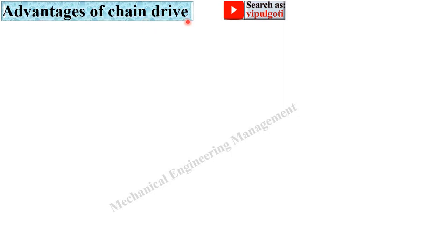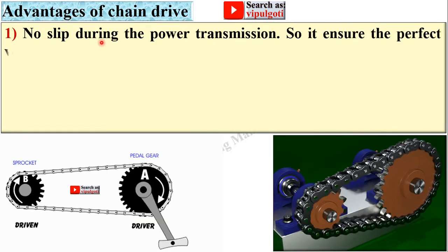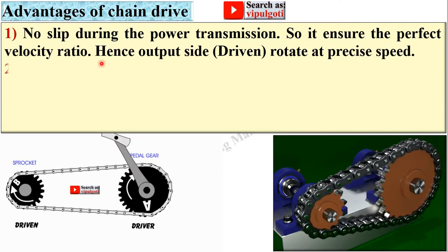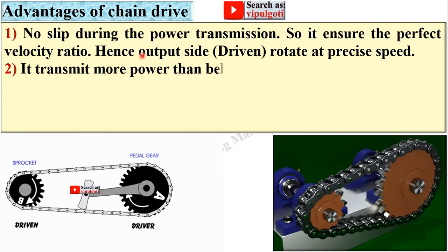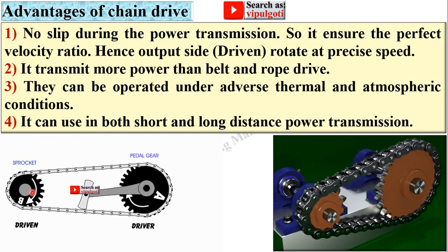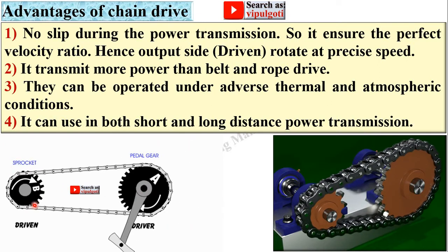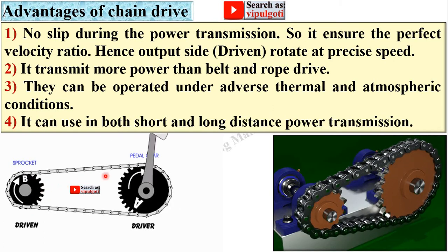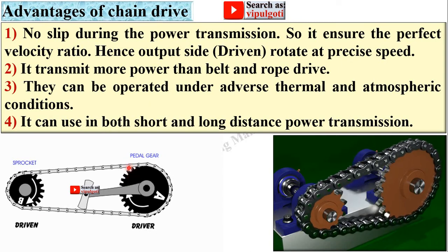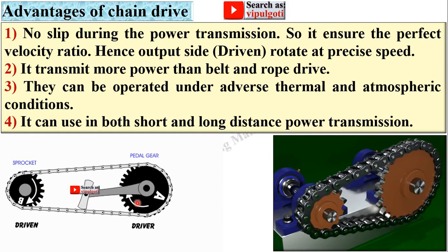Now advantages of chain drive. First, no slip during the power transmission. So it ensures the perfect velocity ratio, hence output side rotate at precise speed. Here you can see this is the input side and this one is the output side. In case of chain drive there is no slip between the sprocket and the chain so that perfect velocity ratio is maintained.